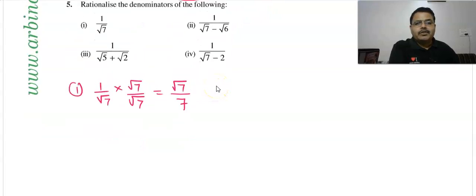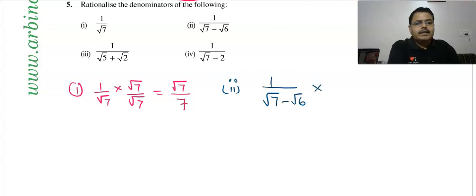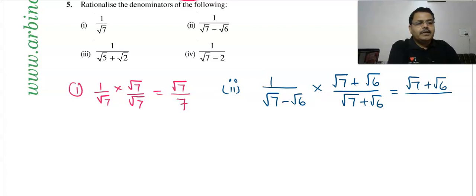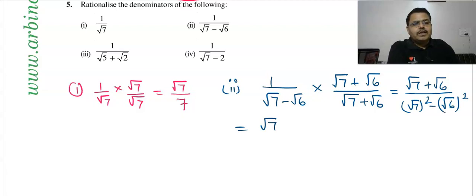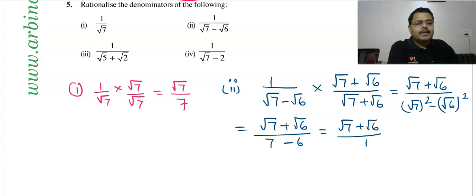Second question: 1/(√7 − √6). We use the conjugate method — minus becomes plus. Multiply by (√7 + √6)/(√7 + √6). The numerator becomes √7 + √6, and the denominator becomes √7² − √6² = 7 − 6 = 1. So the answer is √7 + √6.